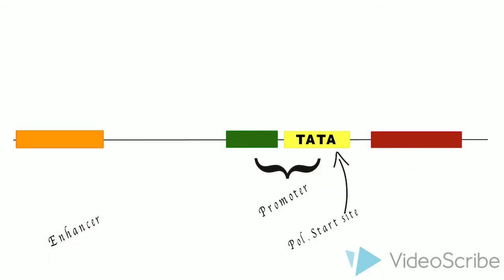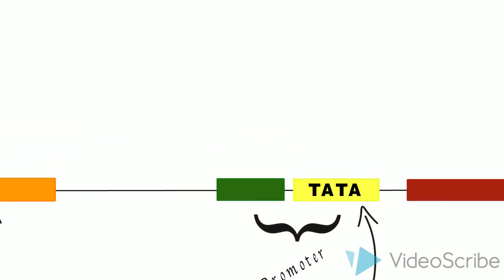Lastly, we have the enhancer. There can be one or multiple enhancers, and these are usually located a ways upstream from the promoter.